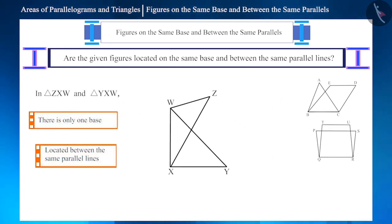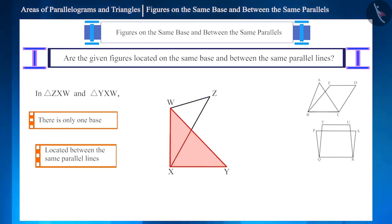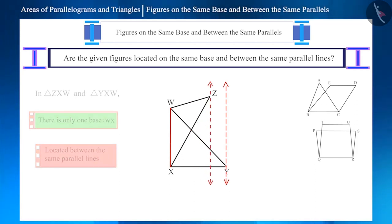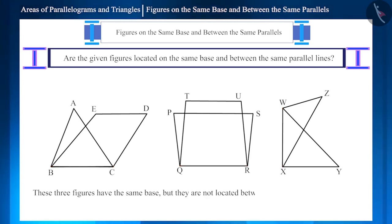Now for the third figure — what do you think about the height and base of these triangles? Side WX is the common side, so we can say that these two triangles have the same base WX. But these are not located between the same parallel lines. This means while these three figures have the same base, they are not located between the same parallel lines.